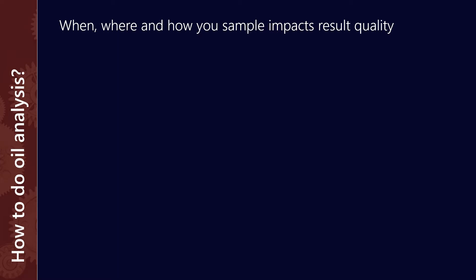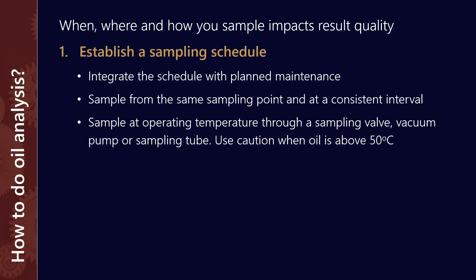When, where, and how you sample greatly impacts the quality of the results. The first thing that we need to do is establish a sampling schedule. One of the things we want to do here is integrate that schedule with all the other planned maintenance activities that we have. So if we're visiting a gearbox once every six months, that's a great time to take a sample. I'll have another video on recommendations for sampling intervals, but unless you integrate it with the rest of your maintenance program, it likely won't happen.